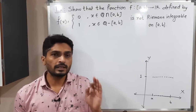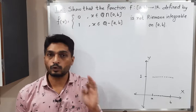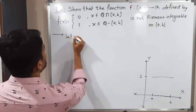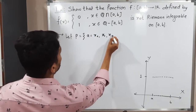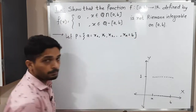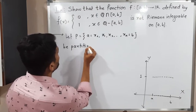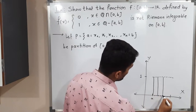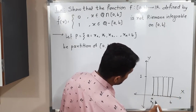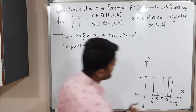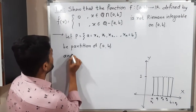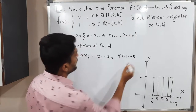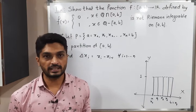We have to prove that the function is not Riemann integrable. The technique is simple: we have to prove that the upper integral is not equal to the lower integral. First we take a partition P = {a = x₀, x₁, x₂, ..., xₙ = b} of the closed interval [a,b]. Here delta x_i = x_i − x_{i−1} for all i running from 1 to n, which gives the length of each sub-interval.